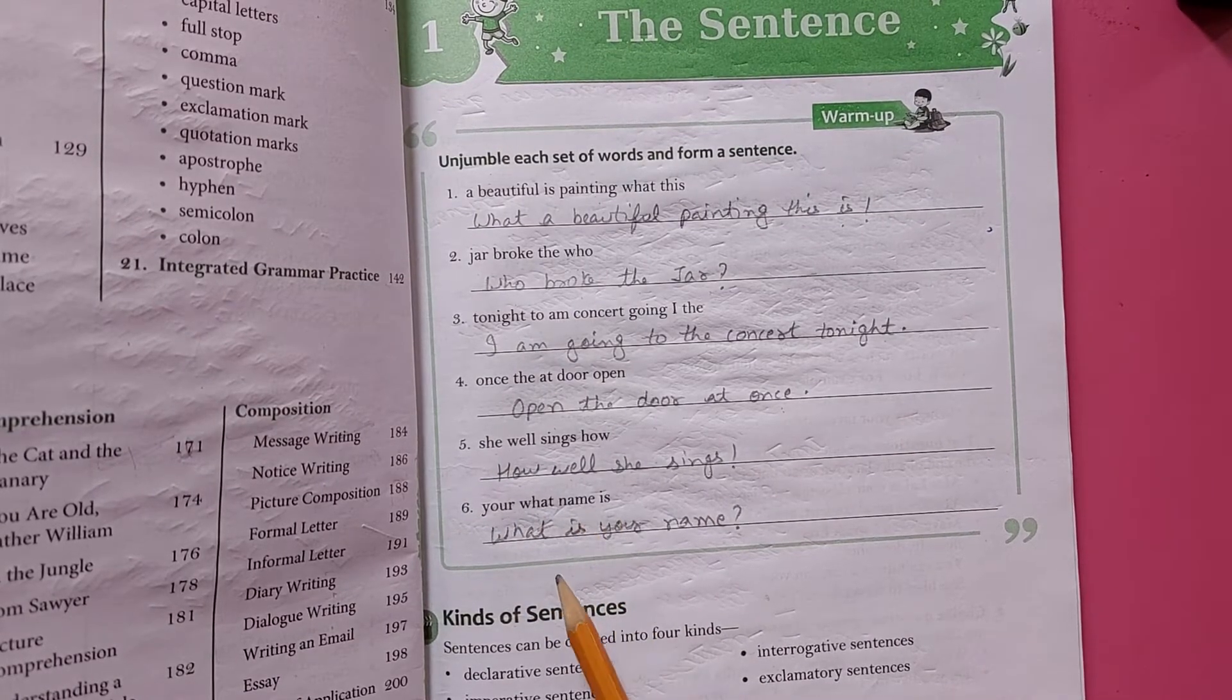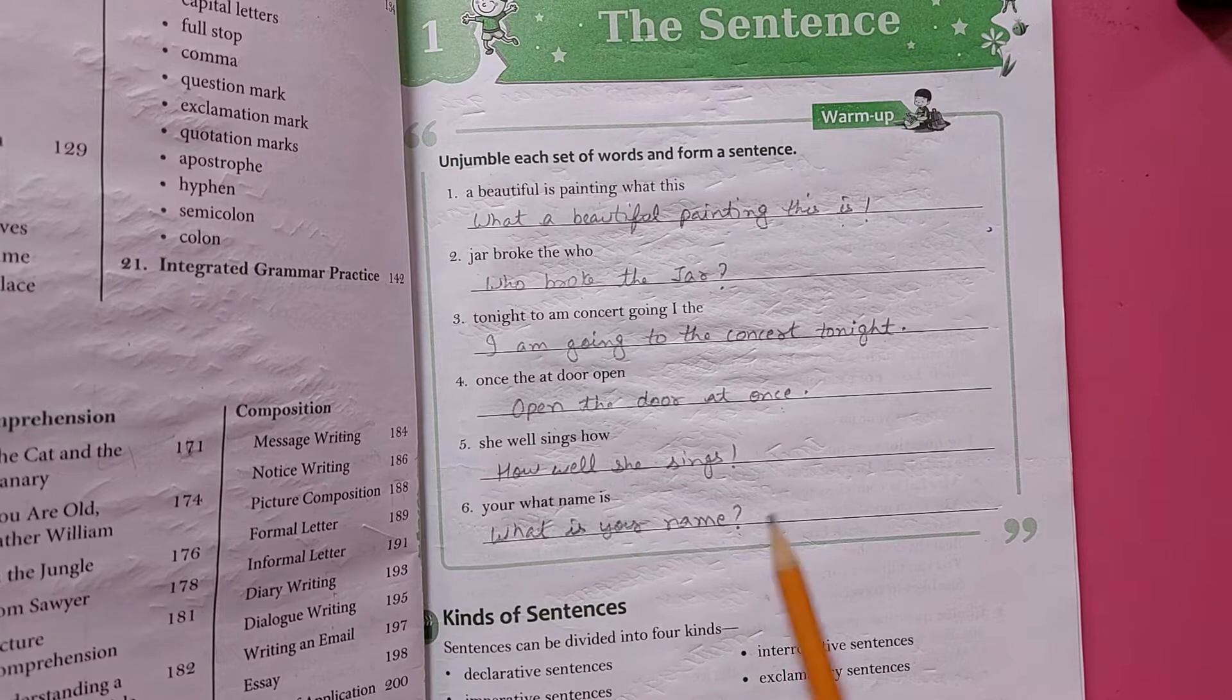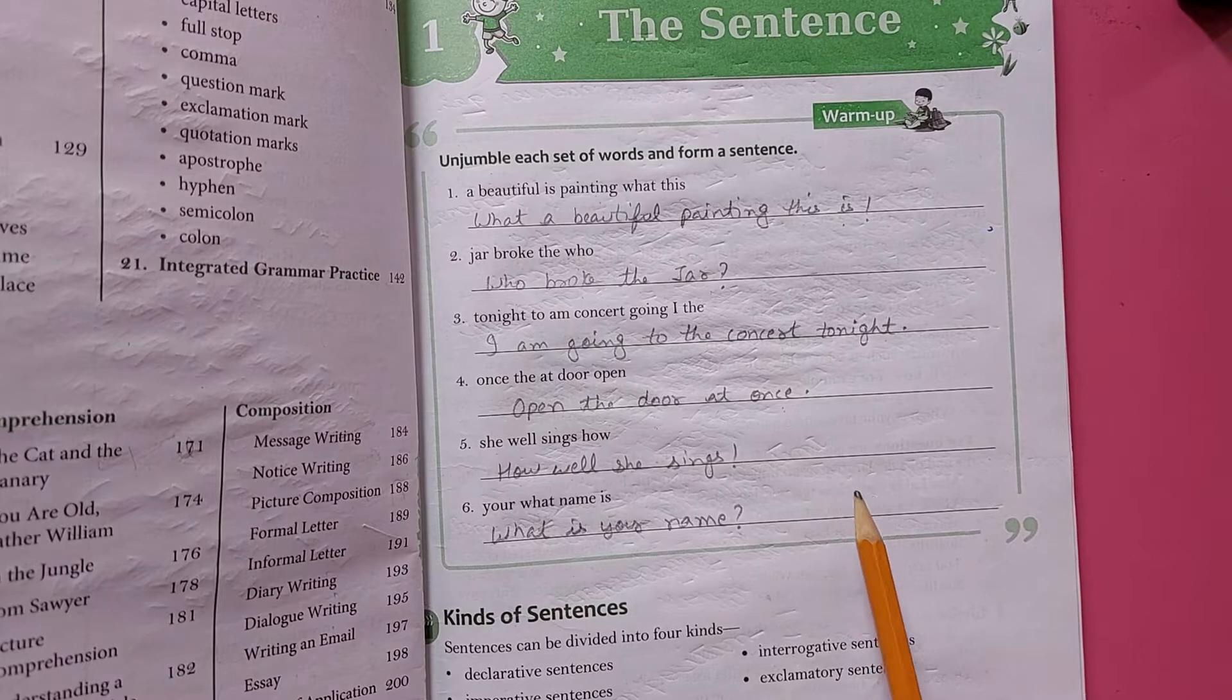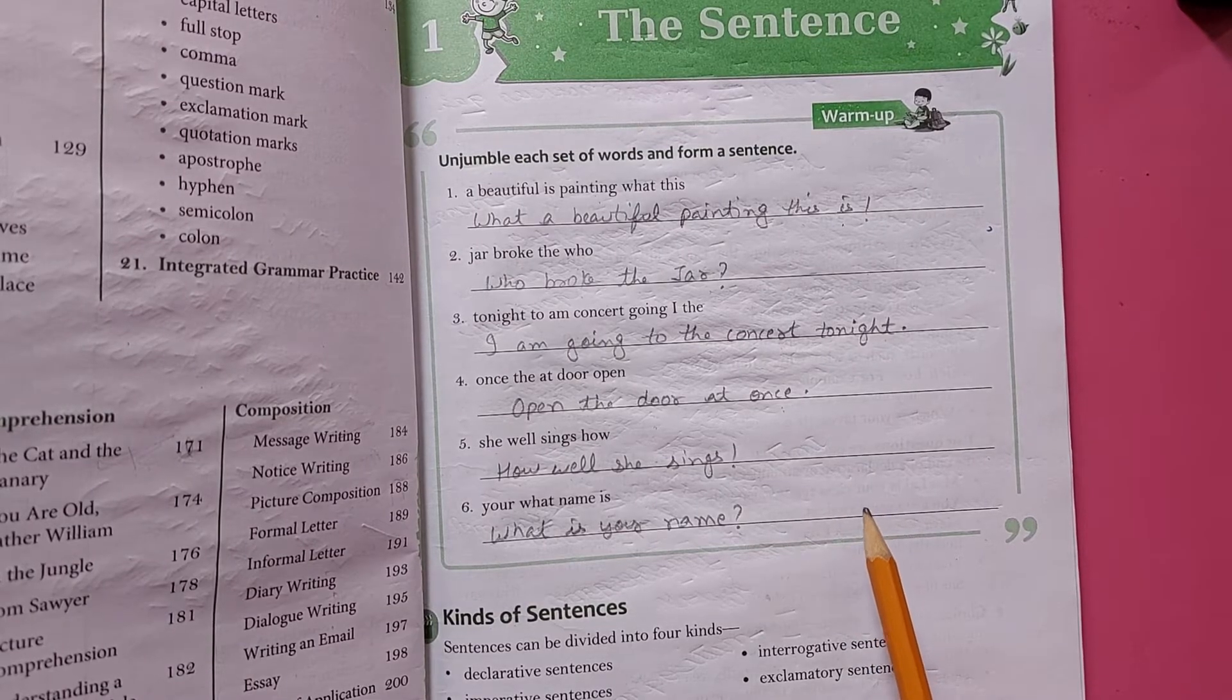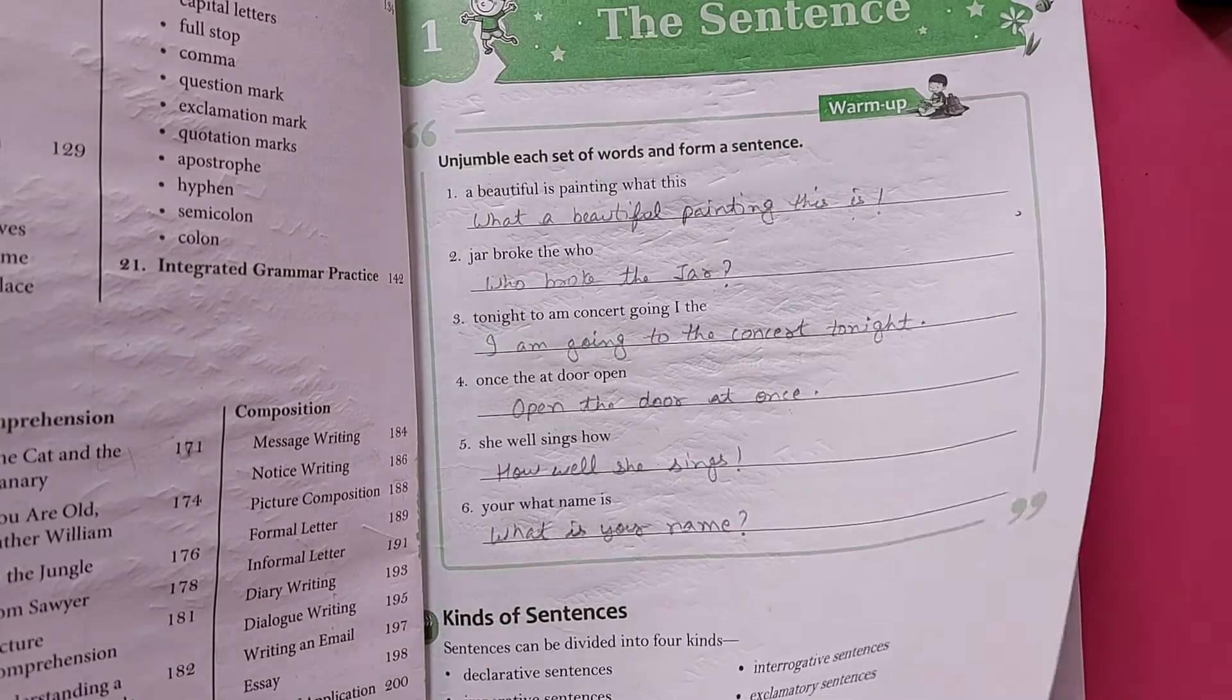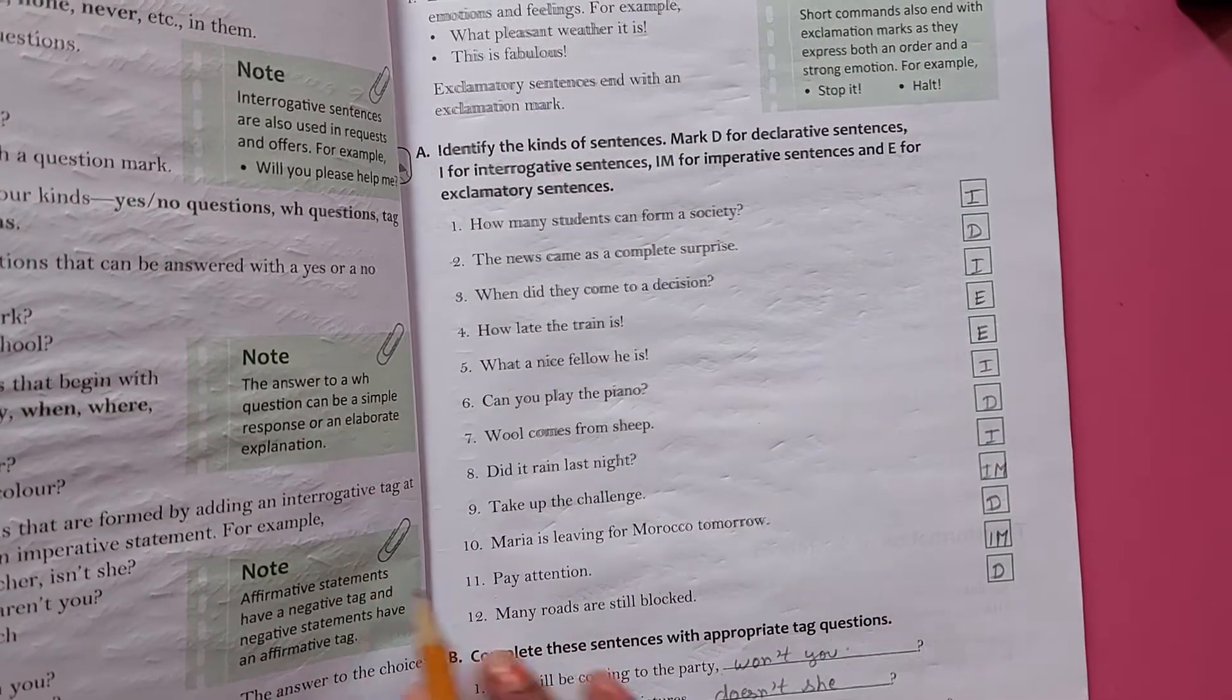What is your name? Question form mein aagya. To ye un-jumble, jo set of words thae, humne isko ek form of sentence mein convert kar diya hai. Better now, you just open your page number 3.